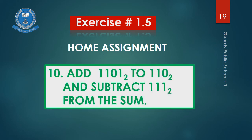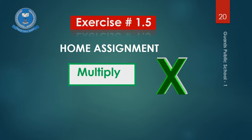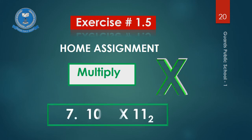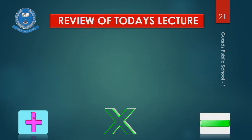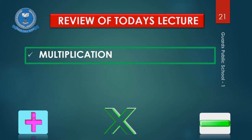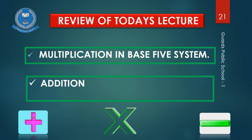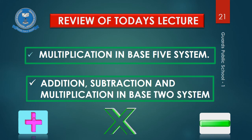Exercise number 1.5 and your home assignment is question number 10: add 1, 1, 0, 1 with base 2 to 1, 1, 0 with base 2 and subtract 1, 1, 1 with base 2 from the sum. First add the two numbers, then subtract the third number from the result. Also from exercise number 1.5, question number 7 is 101 with base 2 multiplied by 11 with base 2. Now review of today's lecture: today we covered multiplication in base 5 system and addition, subtraction and multiplication in base 2 system.